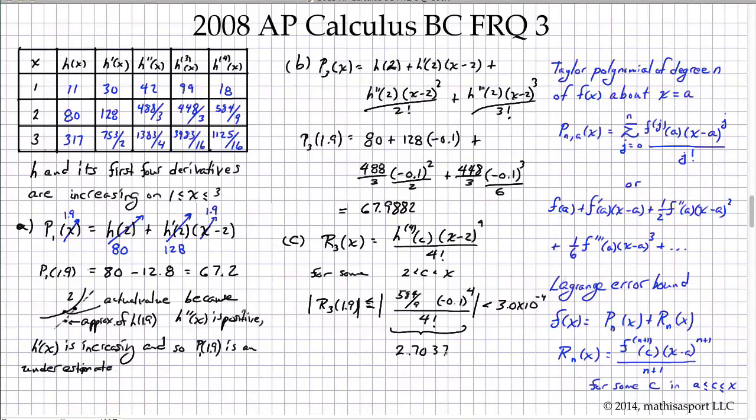Again, things to be careful for: remember that when we're doing a Taylor polynomial about a particular value, then all the derivatives get evaluated at that value. And then since they're asking us to work at x equals 1.9, that's what goes in here. And so it's the difference that we're expanding in terms of powers of that difference of negative 0.1.